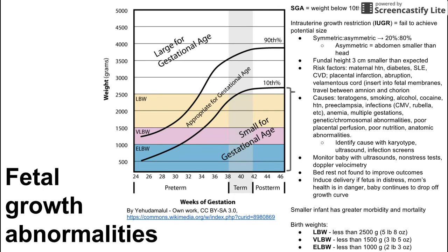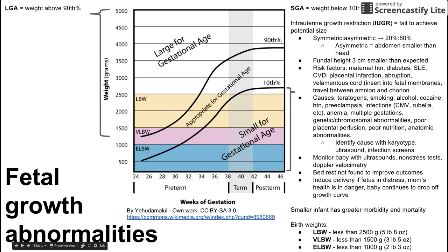Now let's talk about babies that are too big for gestational age — that's the entire area above the 90th percentile on the chart. Large for gestational age, or LGA, is defined as a weight above the 90th percentile for gestational age, and it can also be diagnosed with fetal ultrasound.